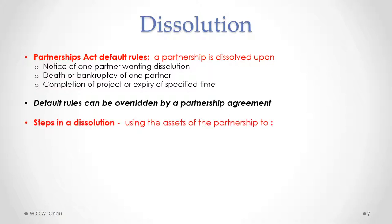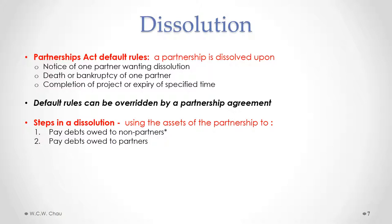If a dissolution is required, there are a number of steps to be taken. First, we liquidate the assets of the partnership — selling them for cash. We then apply that cash first to pay the debts owed by the partnership to non-partners, such as suppliers and creditors like a bank. Next, if there is still money left over after paying non-partners, we pay any debts owed to partners, such as loans the partners had made to the partnership.